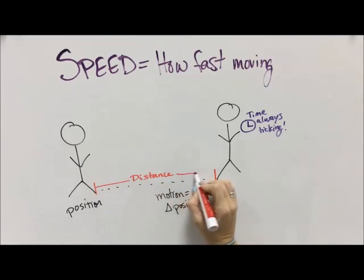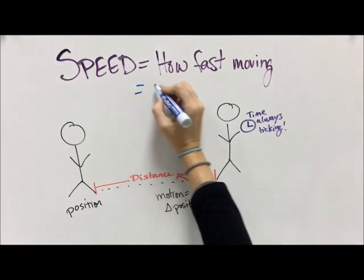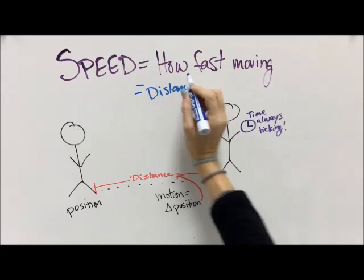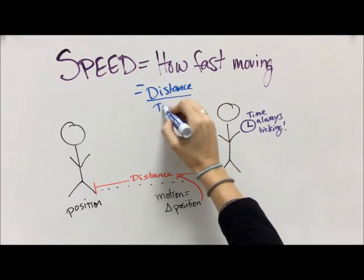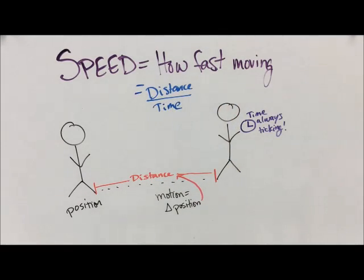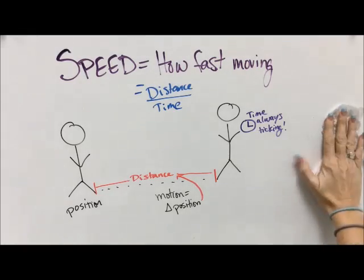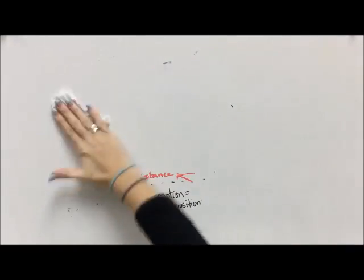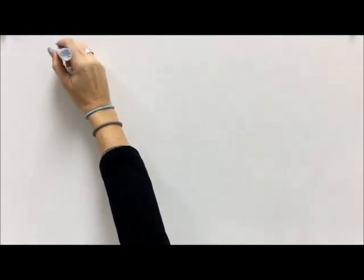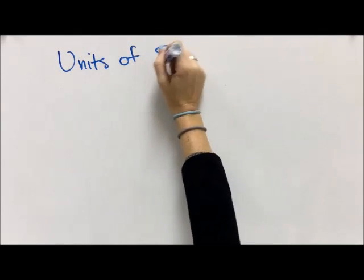And then your change in position, your motion, can be measured in distance. So we wind up with two measurements that we can use to describe speed, and that's distance and time. We need to know the distance that something is traveling and the time that it takes that journey to happen in order to figure out how fast or how speedy something is.